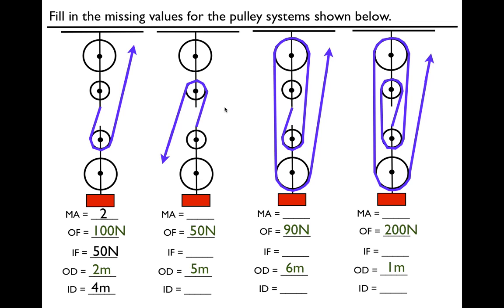The next one is a little tricky. You'll notice if we count across there's two, but this string is not supporting this weight. There's really only one string supporting this weight. This string does not support the weight. Over here we had two — this one and this one — but this string is the only one supporting this weight. The one that rolls over the top doesn't count in the MA. We just count across the center here. There's only one string — mechanical advantage is one.